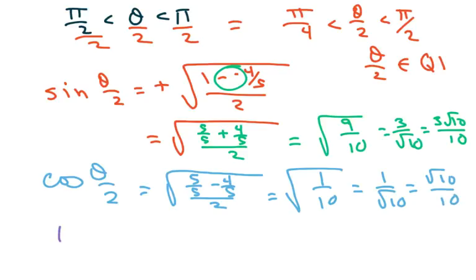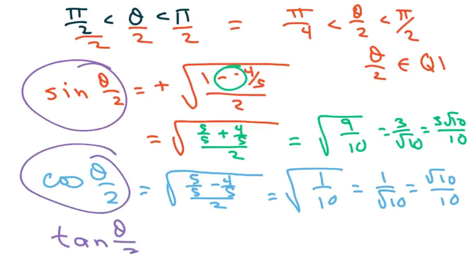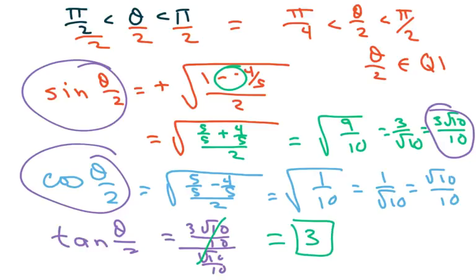Now for tan, I'm just going to divide sine over cosine. So that means 3 square root of 10 over 10 divided by square root of 10 over 10. And what happens is these two cancel, and our answer is 3. Basically these are the same, so they just cancel out.